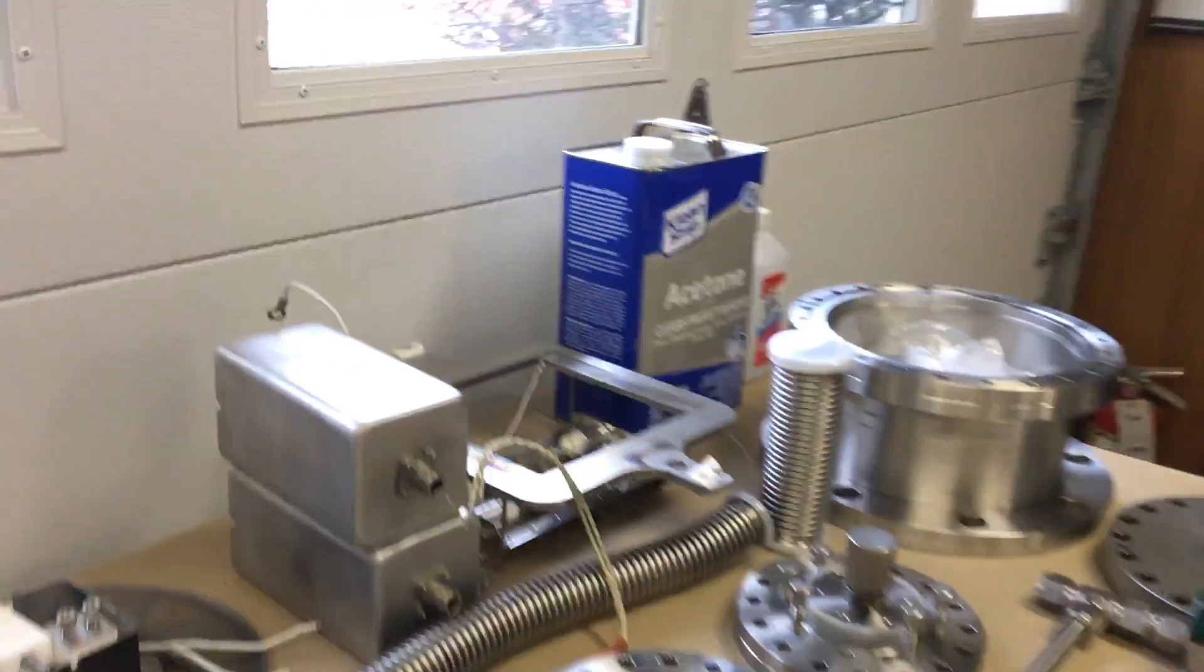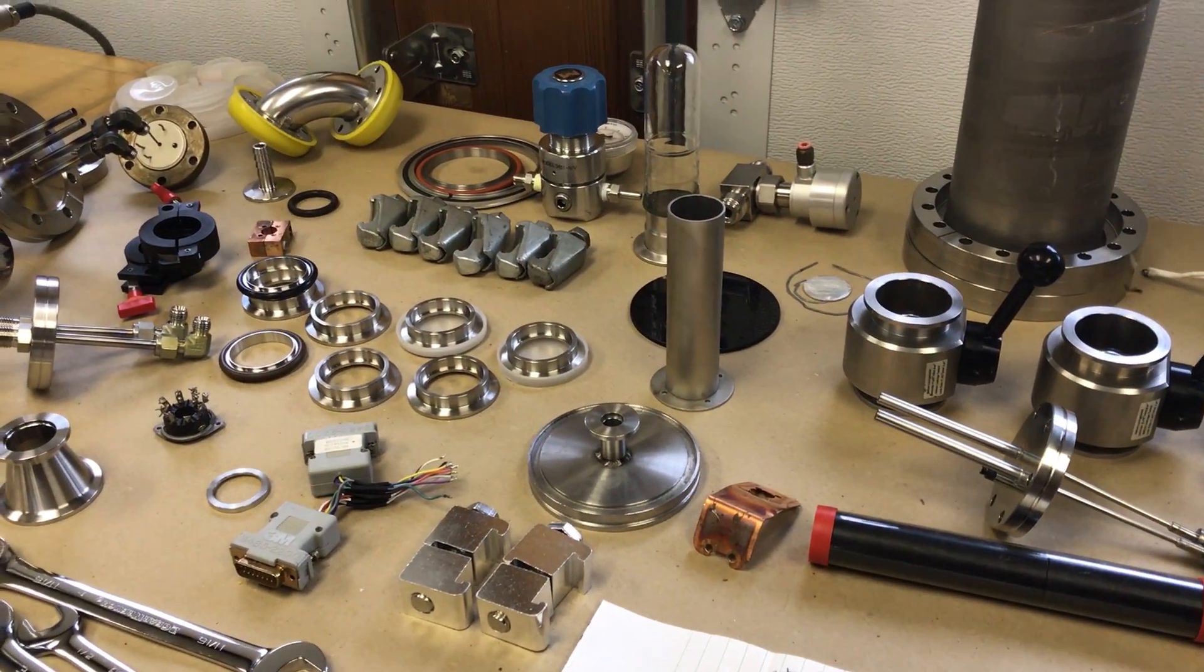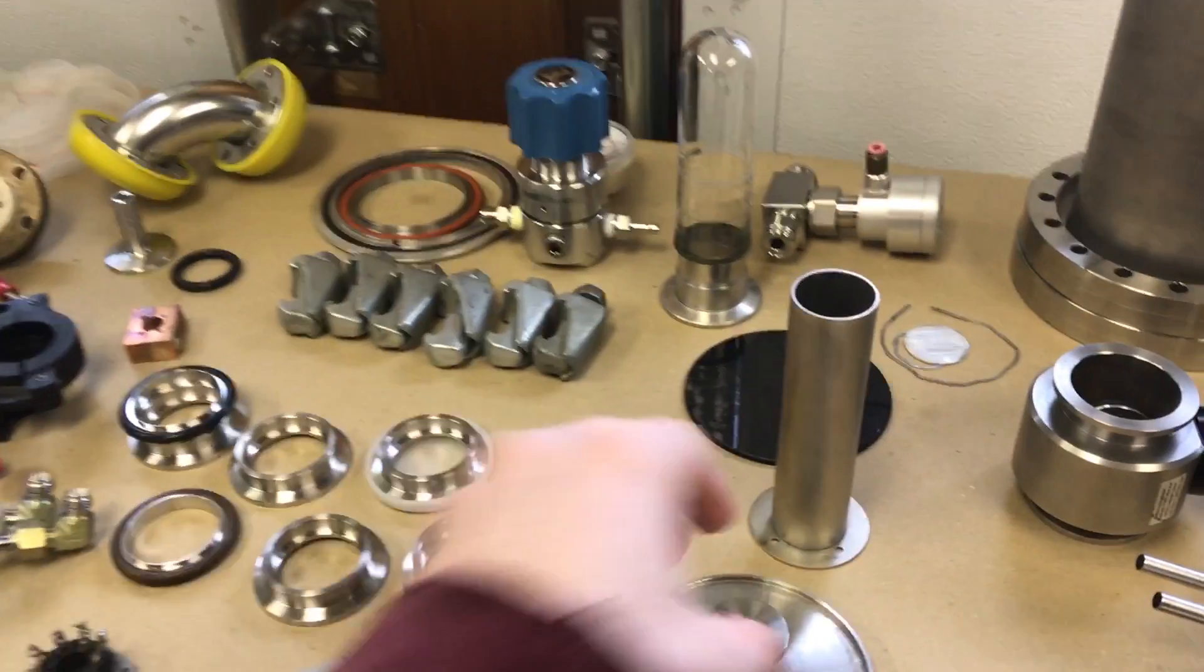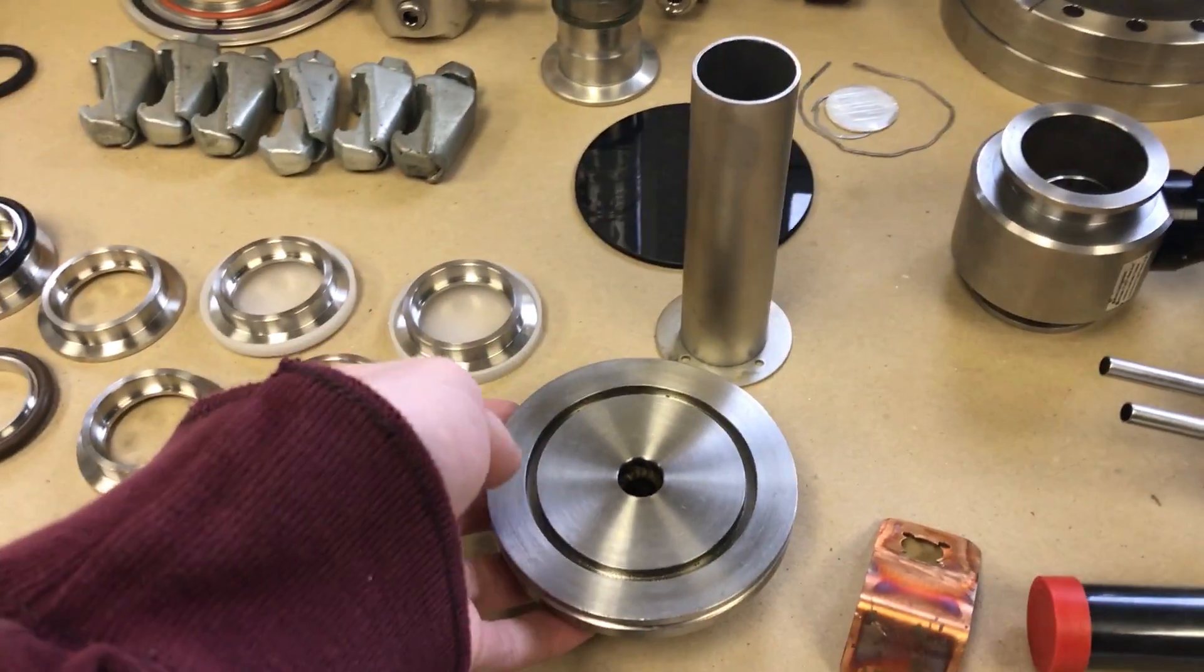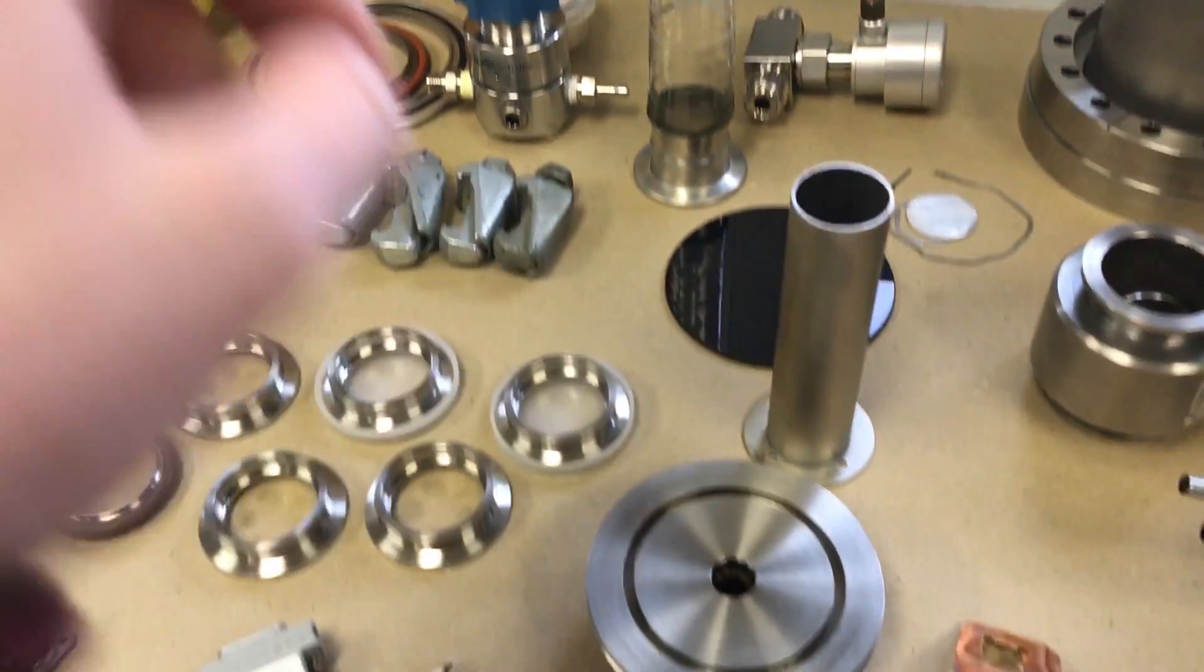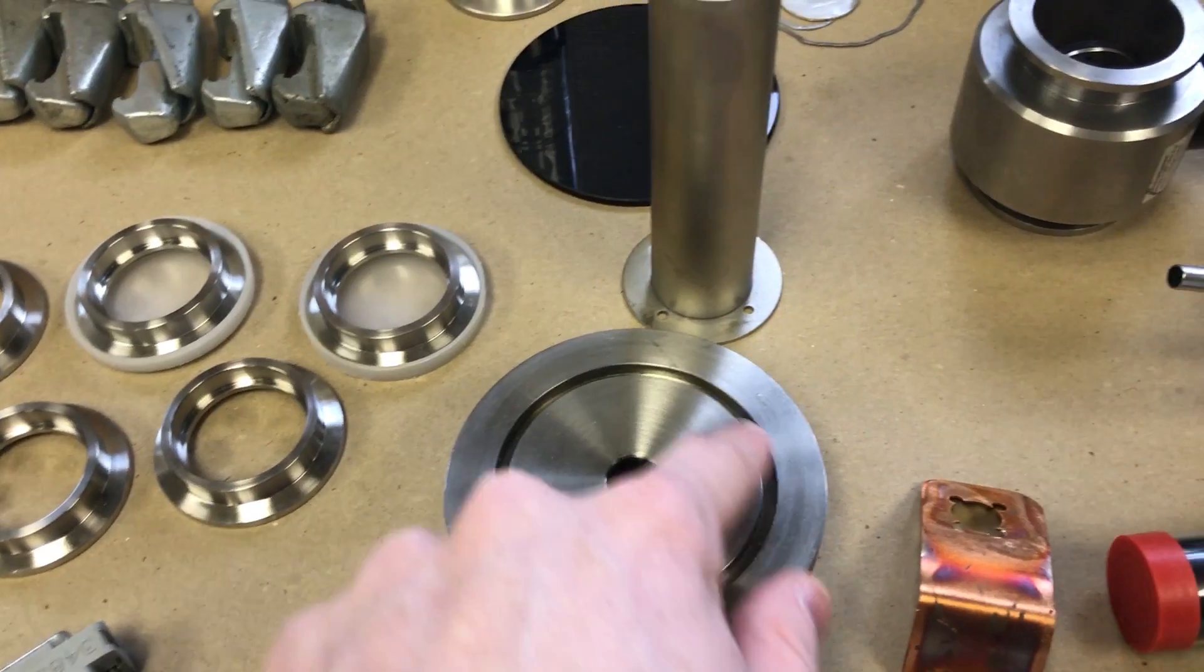So then there's ISO seals, which are not quite as good as the conflat because they use a gasket. So here, this is an ISO-K. There's ISO-F, which is the same thing, but instead of using clamps, it uses through-hole bolts. So the ISO has a flange that has a groove in it, and there'll be a centering ring assembly.